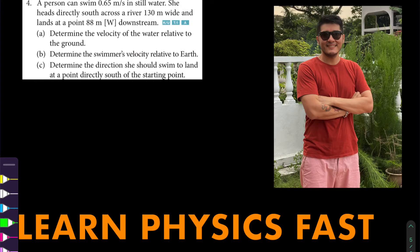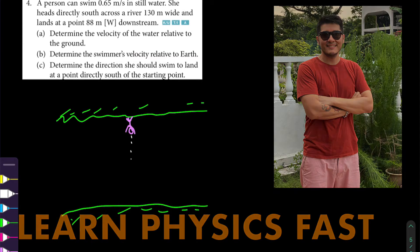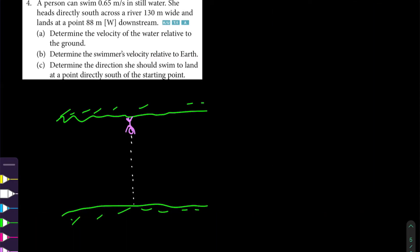A person can swim 0.65 m/s in still water. She heads directly south across a river 130 m wide and lands at a point 88 m west downstream.